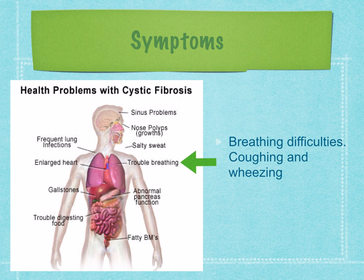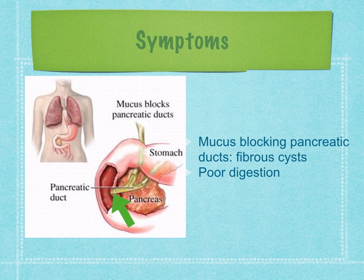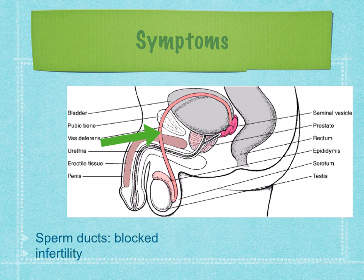In some cases, the lungs may become scarred. The person will wheeze and cough to bring up phlegm, and repeated chest infections such as pneumonia result. Accumulation of thick mucus also blocks the pancreatic ducts, preventing pancreatic enzymes from reaching the duodenum and resulting in poor digestion. The proteases in the pancreatic juice begin to digest the pancreatic tissue and fibrous cysts develop — which is where the name cystic fibrosis comes from. Accumulation of thick mucus also blocks the sperm ducts in males, possibly leading to infertility.